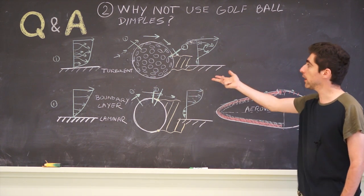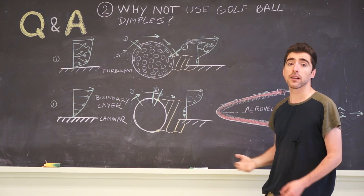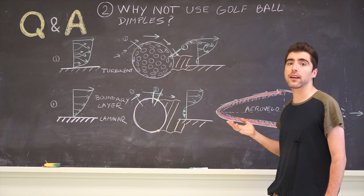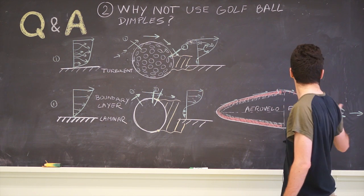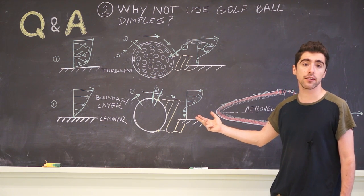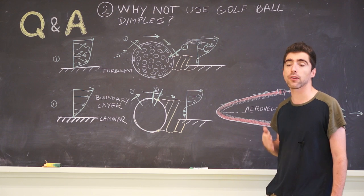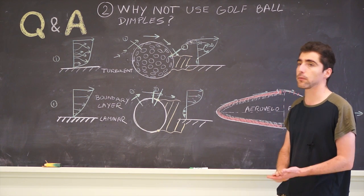So as it turns out, if your object is a sphere, it's likely going to benefit from having dimples, but if your object is streamlined, so it has no separation to start with, there is no reason to put dimples on it.